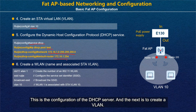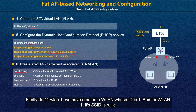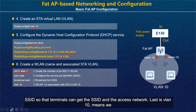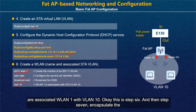This completes DHCP server configuration. The next step is to create a WLAN: '.11 WLAN 1' creates a WLAN with ID 1. For WLAN 1, the SSID is 'Ruijie'. We enable the broadcast SSID function, so the AP will broadcast the SSID and terminals can discover and access the network.